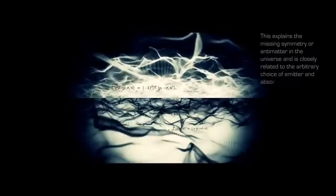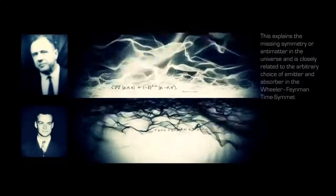This has significant consequences when applied to C. From a quantum perspective, every instance of C has an anti-C. This explains the missing symmetry or antimatter in the universe and is closely related to the arbitrary choice of emitter and absorber in the Wheeler-Feynman time-symmetric theory.